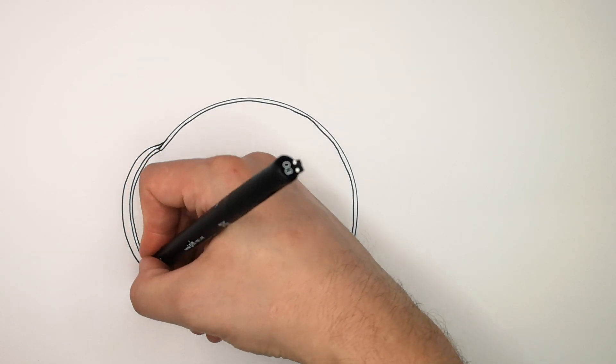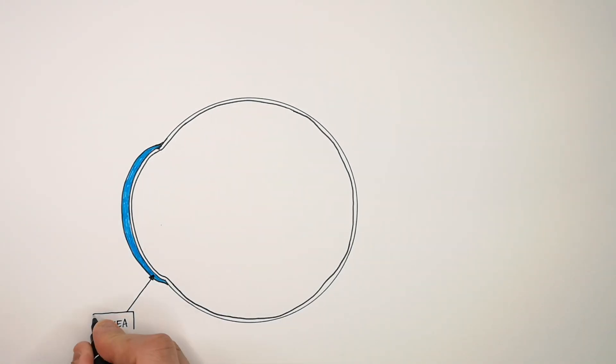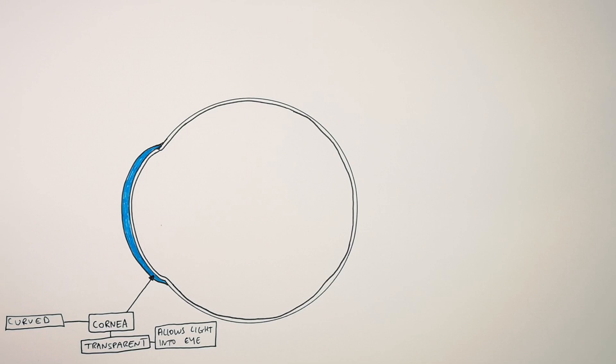The part of the eye that I'm drawing now is the cornea. Do not confuse the cornea and the lens. The cornea sits on the outside of the eye. It's transparent because it needs to allow light through into the eye. It is also curved. It's curved because it needs to refract the light, so bend the light towards the retina, which I'm going to explain in a later video.